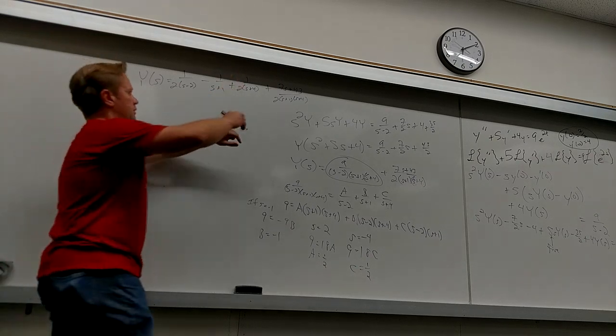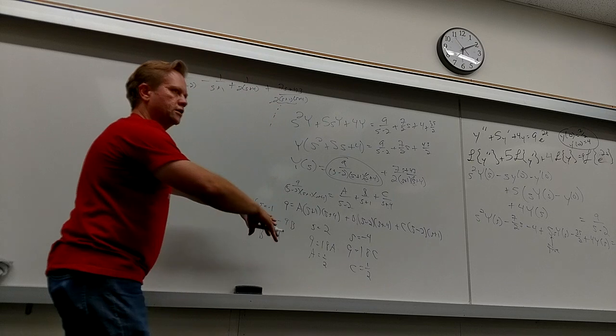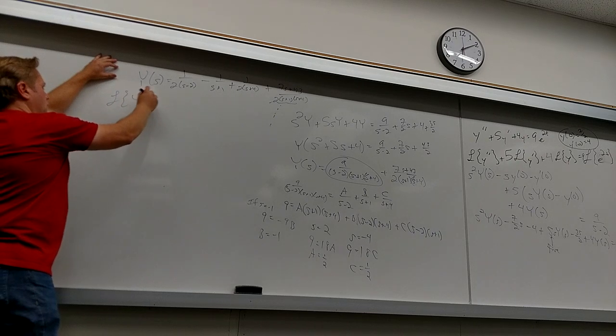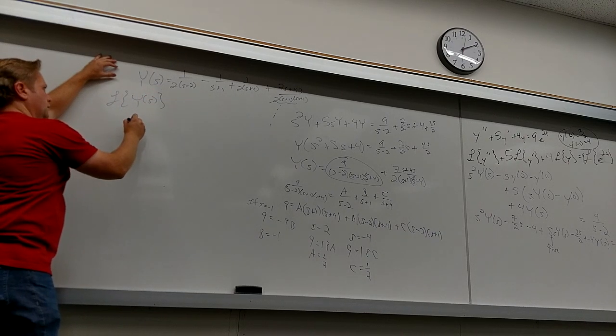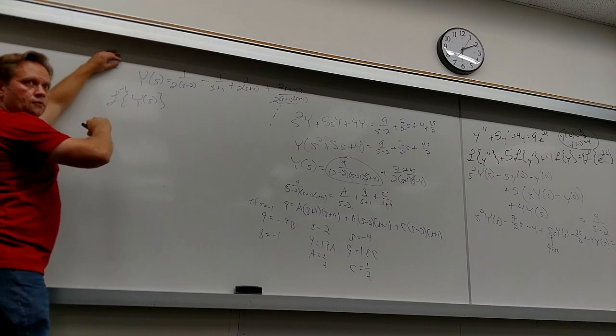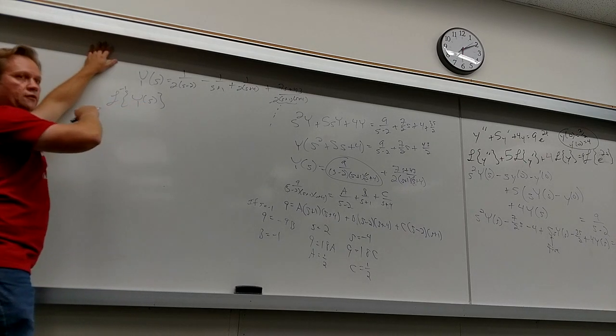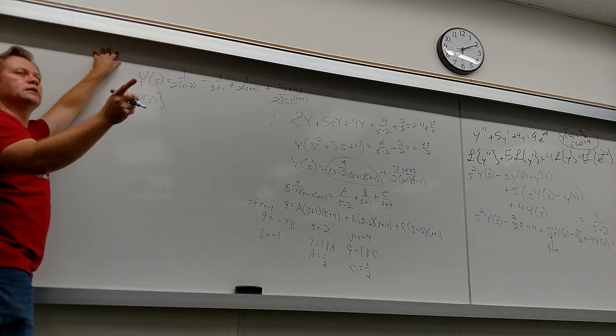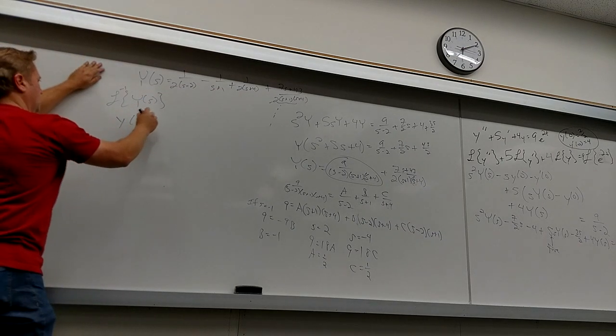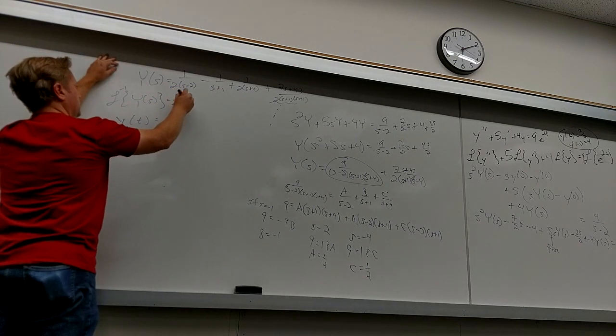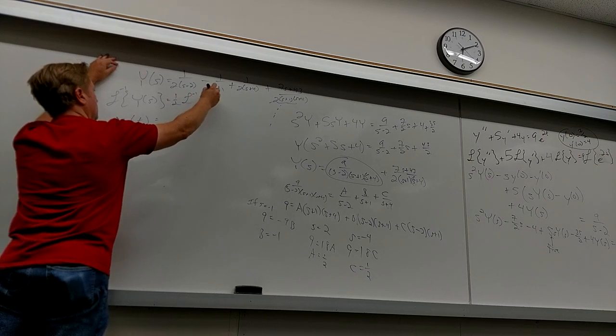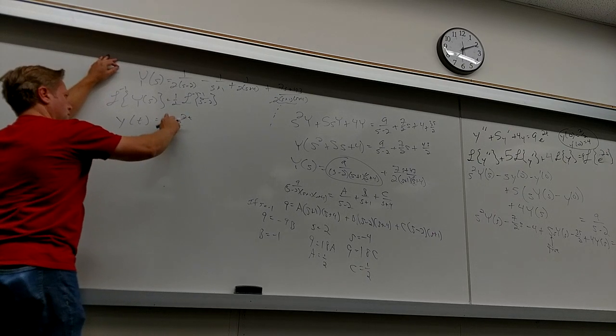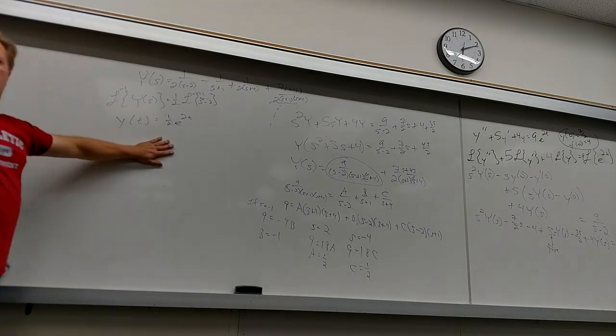And then your final step would be inverse Laplace both sides. So, just go with me for a second. Let's pretend like we did this one. The inverse Laplace of big Y of S? Y of T. And what's this one? What's the inverse Laplace of 1 over S minus 2? E to the 2T. I like it. So each of these becomes just a, so that would be minus E to the negative T plus 1 half E to the negative 4T.